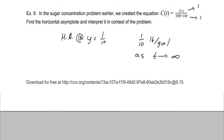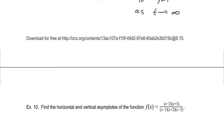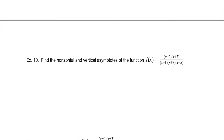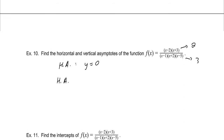For the next function written in factored form, we consider what the degree would be if multiplied out. The numerator has two degree-1 factors giving degree 2, and the denominator would give degree 3. So we have a horizontal asymptote of y equals 0. The vertical asymptotes occur where the denominator is zero: x equals 1, x equals negative 2, and x equals positive 5. None of those factors cancel so there are no removable discontinuities.